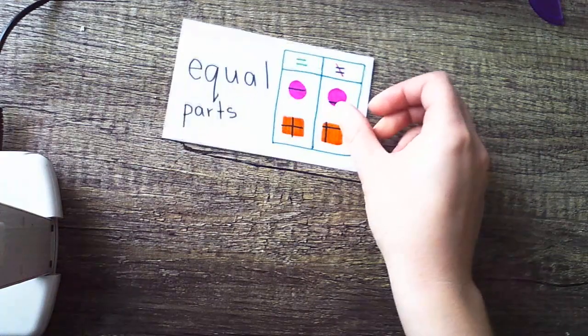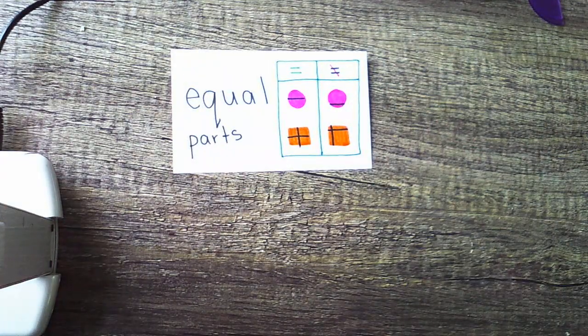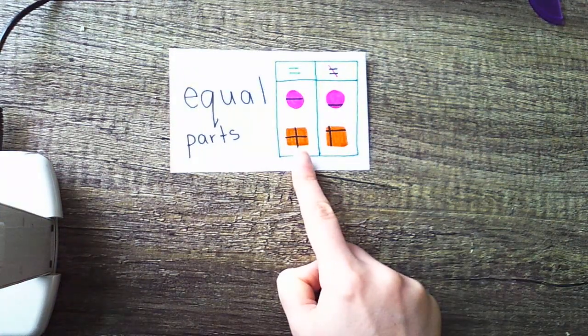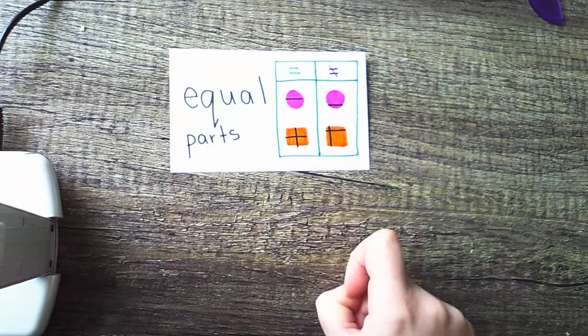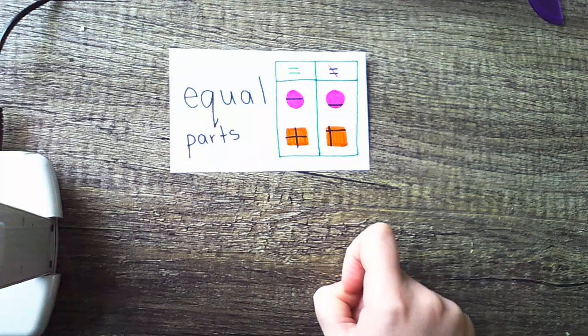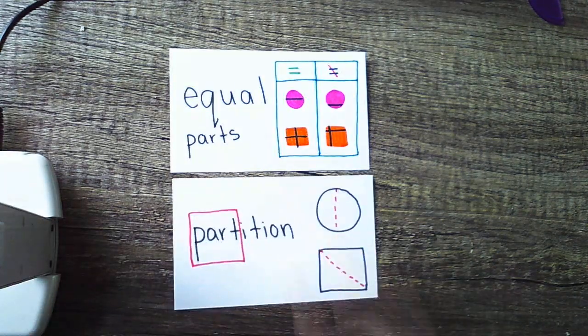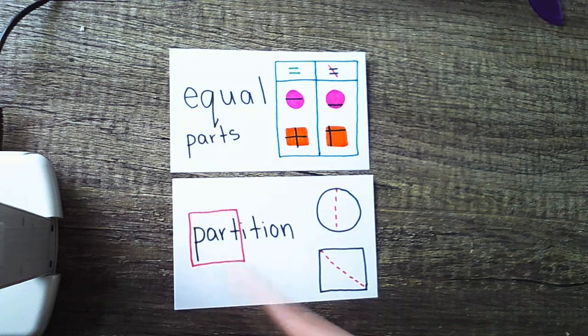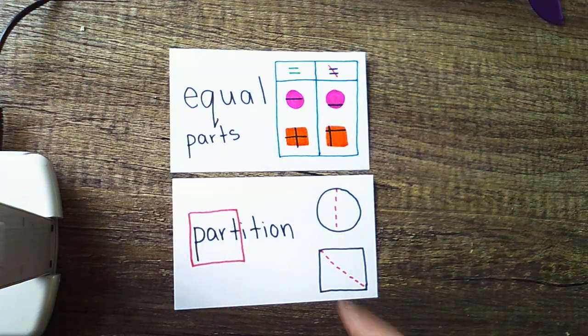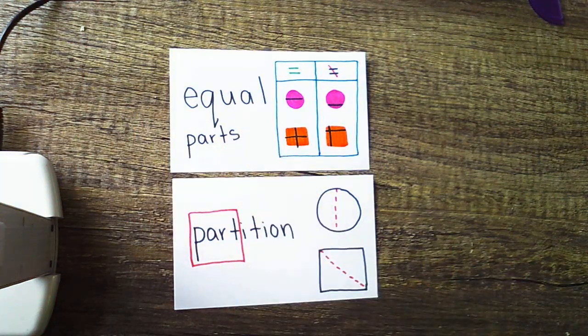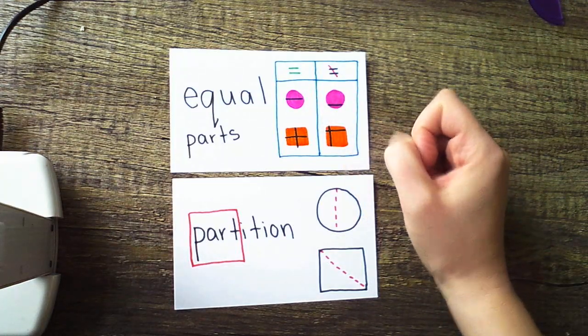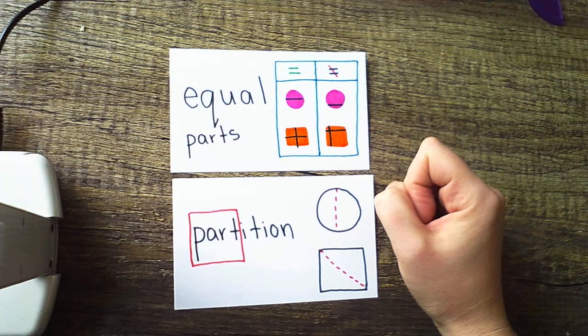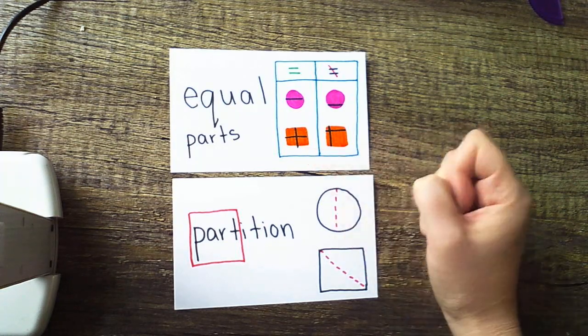All right friends, yesterday we started talking about equal parts and we said that equal parts are the same shape and size. Unequal parts are not the same shape and size and as we are partitioning our shapes or cutting them into parts, we want to make sure that we have equal parts or that's two equal parts, which is what we're working on today as we cut or partition into halves, or four equal parts that will come on Thursday when we're talking about fourths and quarters.